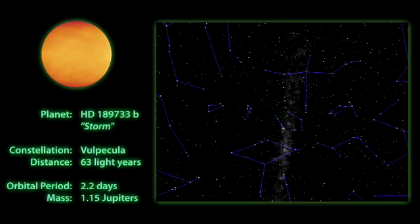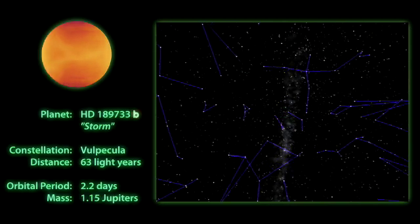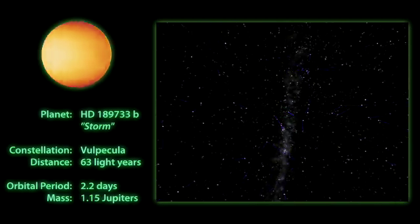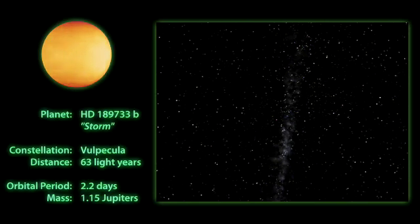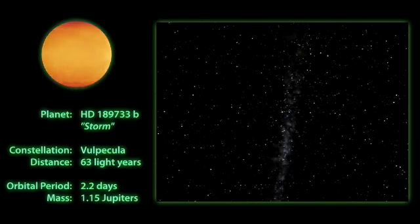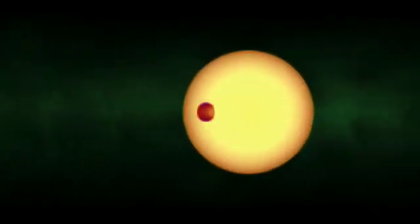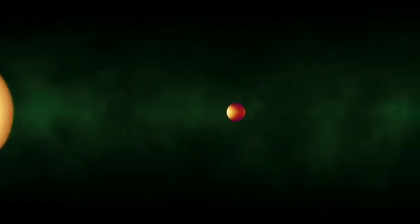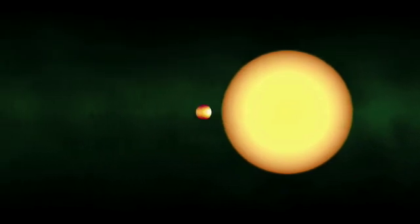A little closer to home, our other X-Planet, Storm, can be found in the constellation Volpecula at a distance of 63 light-years. A team led by Dr. Heather Knudsen carefully studied how Storm's brightness varied over the course of its orbit, and derived the first ever temperature map for an exoplanet.